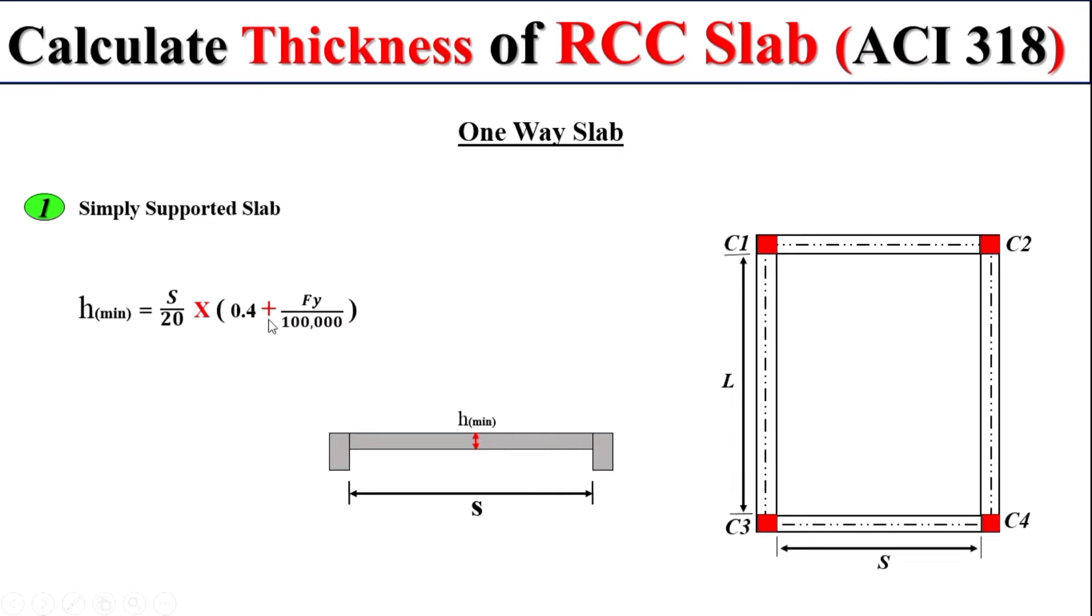If we use grade 60 steel, which is 60,000 psi, in case of 60,000 psi for the FY of 60,000 psi, we will get the value of 1. So if we multiply the 1 value to this term, it means that for the grade 60 steel, it will be value of 1.